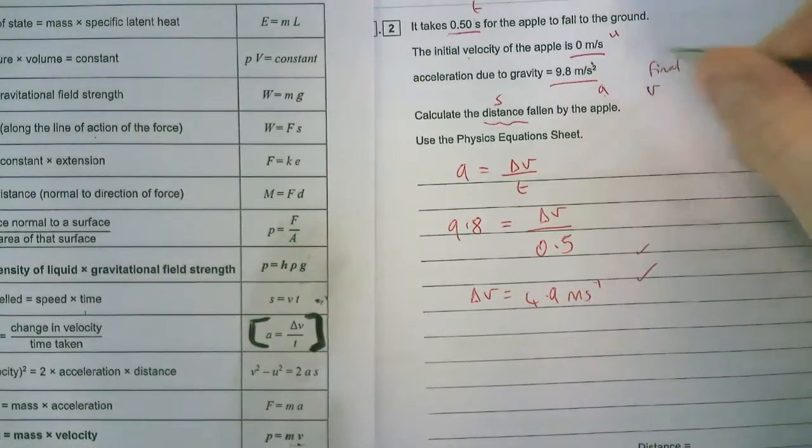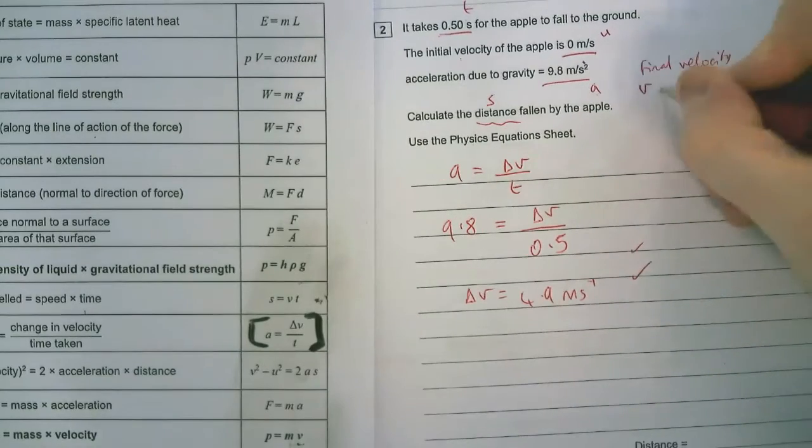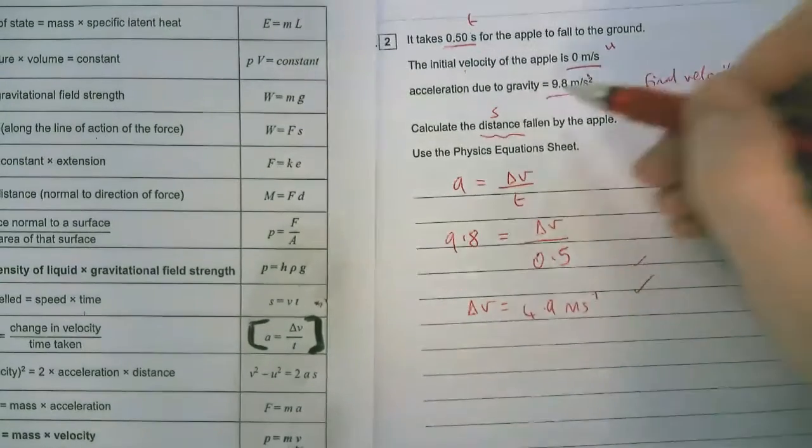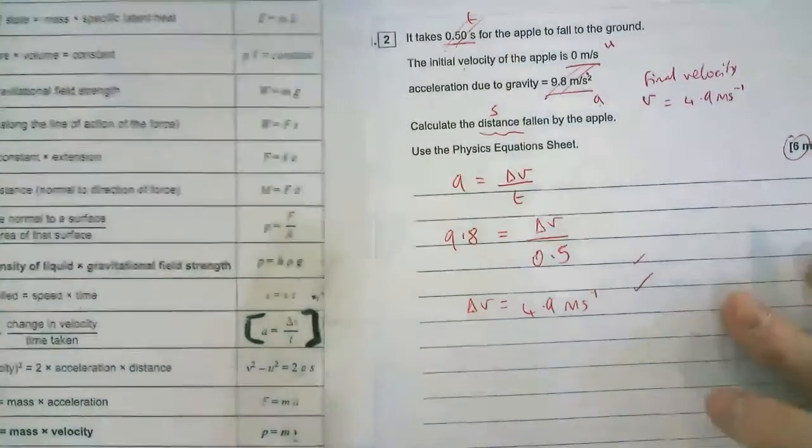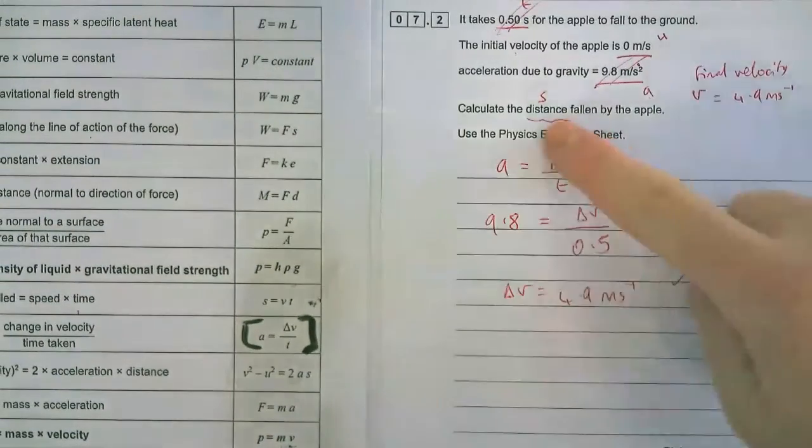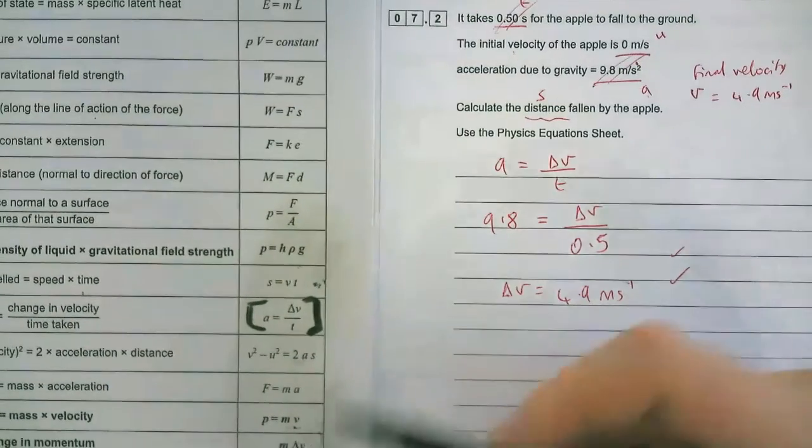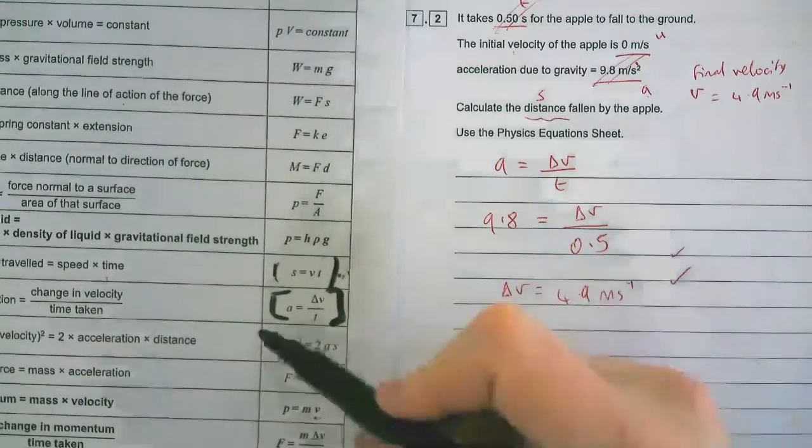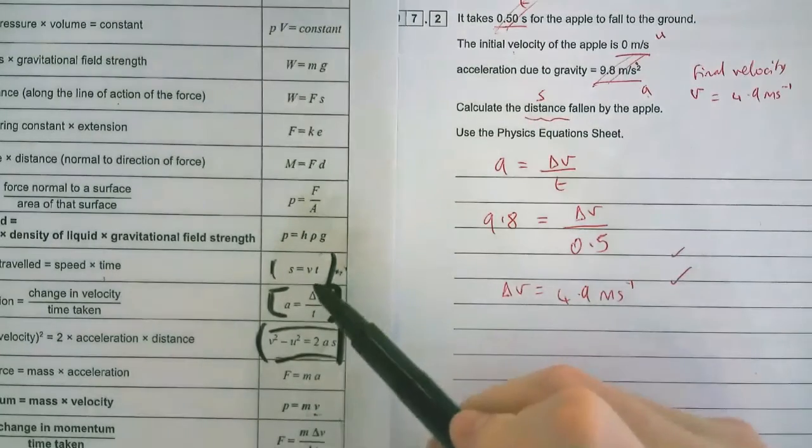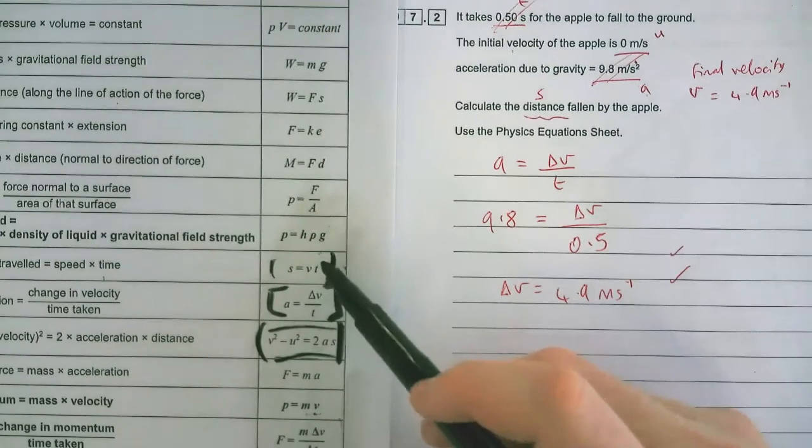Now that's our final velocity. If the apples fall into the ground, that's our final velocity and our initial is zero. So now we've got an extra bit of information to help us solve our equation for distance. Now we have initial, final, acceleration and we're trying to find distance. That means it is this equation here, v squared minus u squared equals 2as. So let's put the equation down and start putting our numbers in.